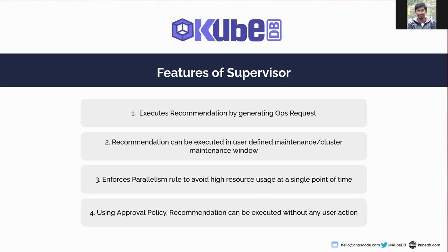The third feature is that the user can enforce a parallelism rule to ensure that too many recommendations don't start executing at the same time, so that high resource usage can be avoided. By default, the namespace parallelism rule is set, which means that at every namespace, only one recommendation is permitted to execute at a single point in time.